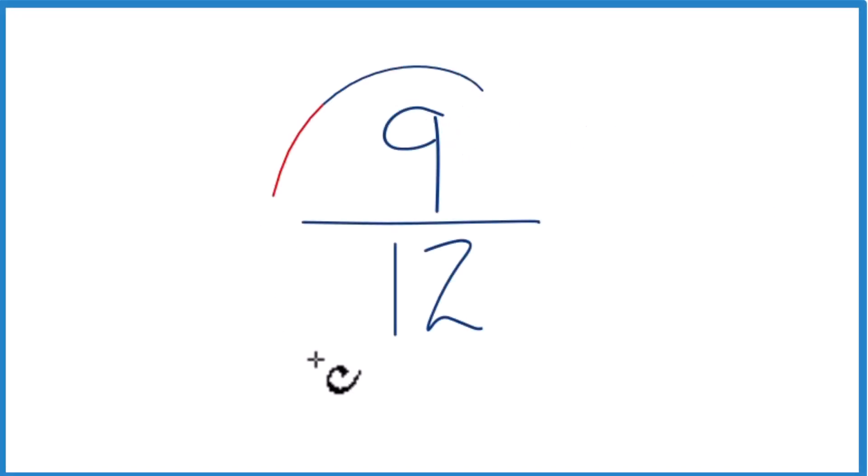Here's how you write the fraction 9 twelfths as a decimal. So we know that 9 is smaller than 12. So when we divide 9 by 12, we get a decimal. We get a number that is less than 1.